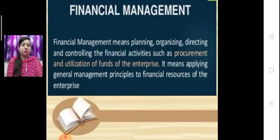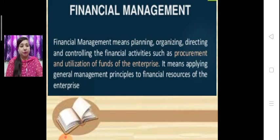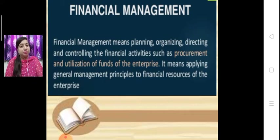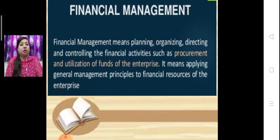So what is the definition of financial management? Management has five functions: planning, organizing, directing, controlling and staffing. But financial management means management of finance, so it covers four functions of management — planning, organizing, directing and controlling — of financial activities such as procurement and utilization of the fund of the enterprise. It means applying the general management principles to the financial resources of the enterprise.